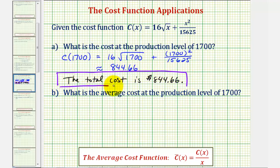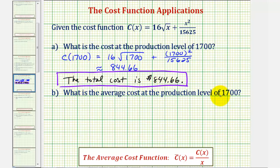Next, we're asked to find the average cost at the same production level, where the average cost function is equal to the cost function divided by the production level, or the total cost divided by the production level. We could just take the value from part a and divide by 1,700, but I do want to go through how we find the average cost function because we'll need this later.